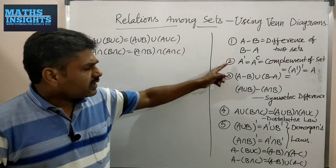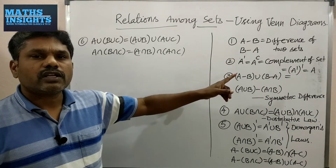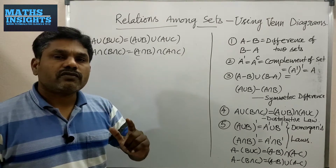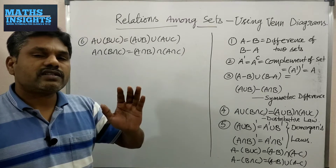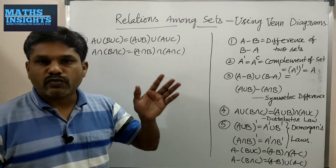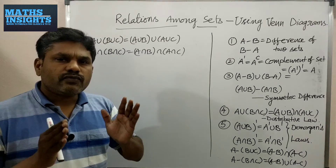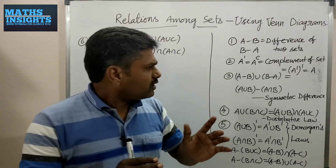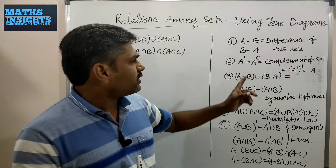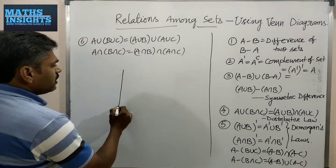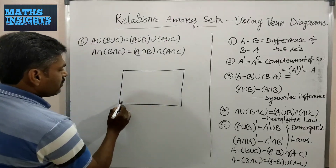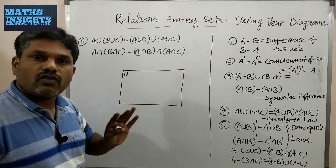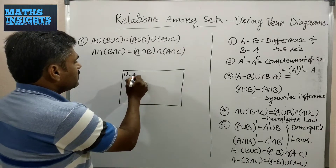The second law is A' or A complement. You know that the complement of a set is μ minus A — A' equals μ minus A, and B' equals μ minus B. To define the complement of any set you have to subtract that set from the universal set. I am going to draw the Venn diagram for A'. As usual, draw a rectangle for the universal set, labeling it U or μ.